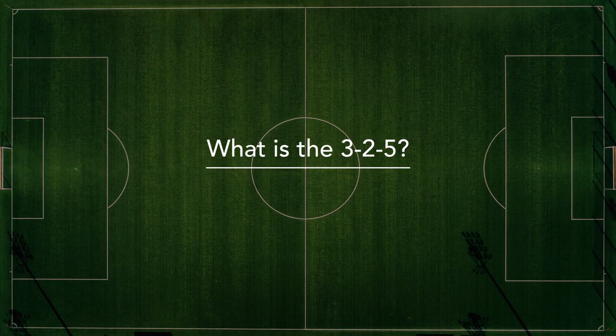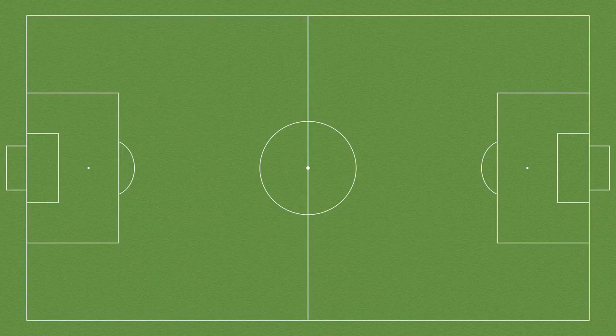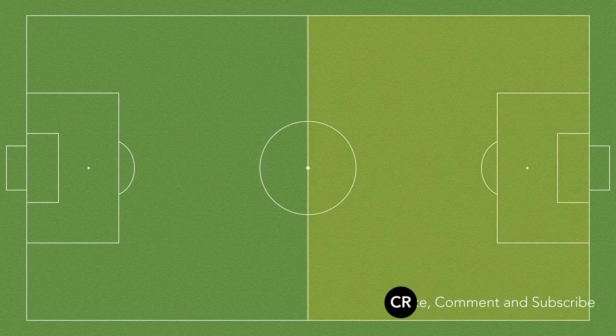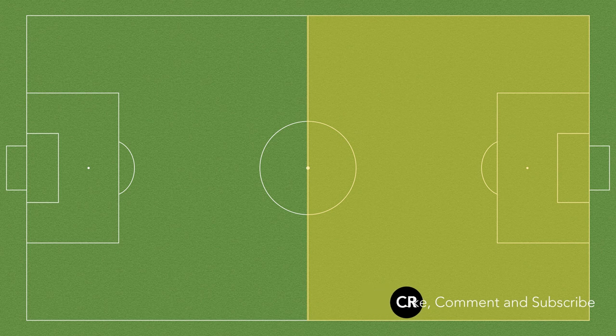When referring to the 3-2-5, we're talking about the shape a team uses when in possession. A team will tend to use this shape in more advanced areas of the pitch. This shape can be created in a couple of ways, so let's take a look.